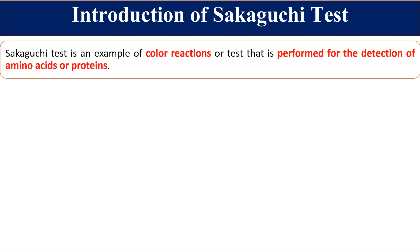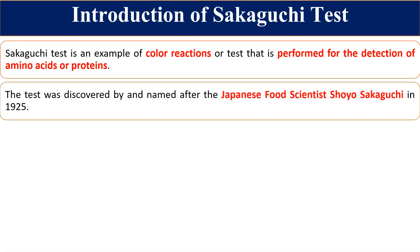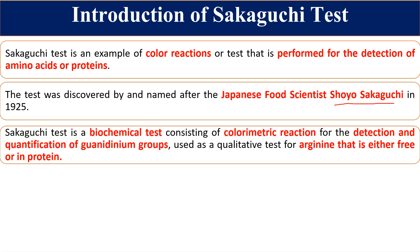The Sakaguchi test is a color-based reaction. There are many different tests for different amino acids or different groups by which we identify either qualitatively or quantitatively. This test is performed for the detection of a specific amino acid, either alone or when present in a protein. The name Sakaguchi was given based on Japanese food scientist Shoyu Sakaguchi in 1925, and this is a biochemical colorimetric test.